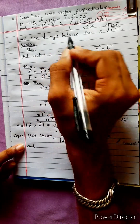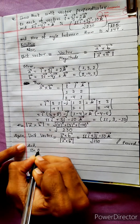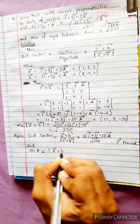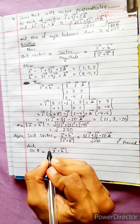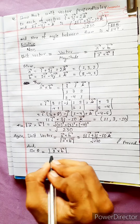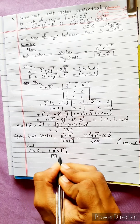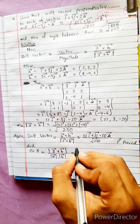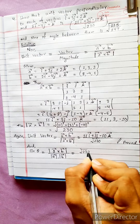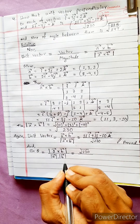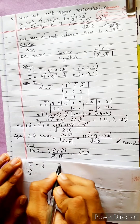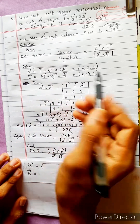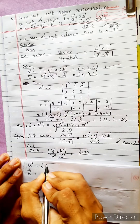Now for the angle between the vectors, sin theta equals the formula involving the cross product magnitude.